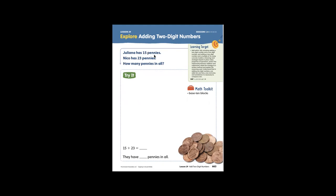Juliana has 15 pennies. Nico has 23 pennies. How many pennies in all?